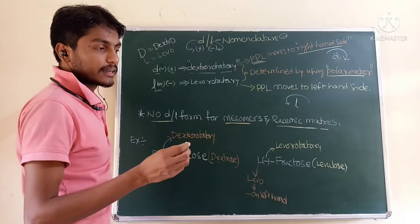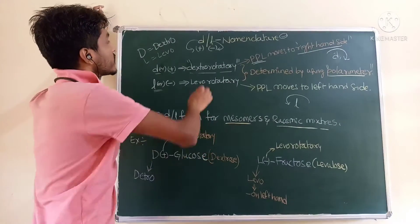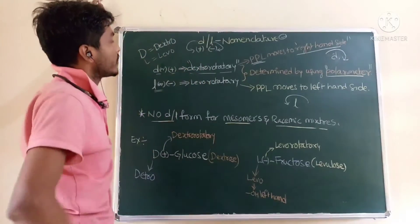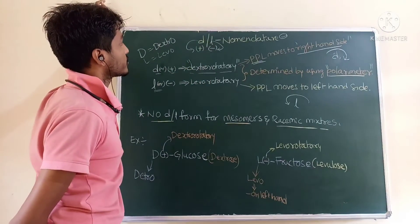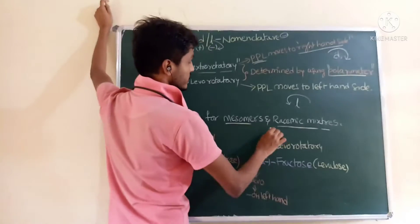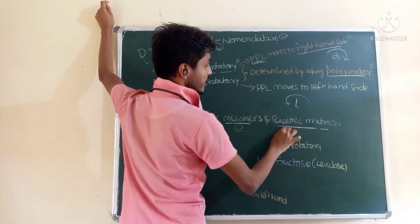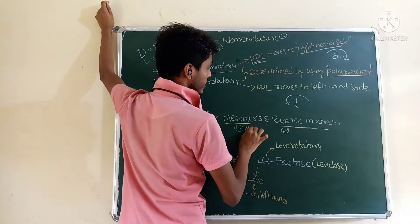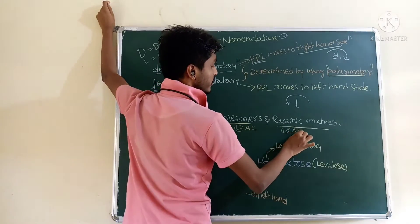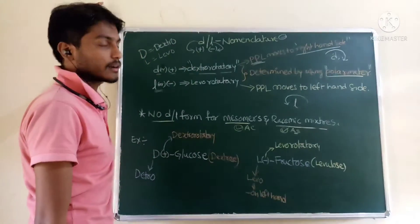If any compound contains asymmetric carbons, that compound can be represented in either D or L form — it may have either small d or small l configuration. However, meso isomers and racemic mixtures also have asymmetric carbons, but we cannot assign small d or small l configuration to them.